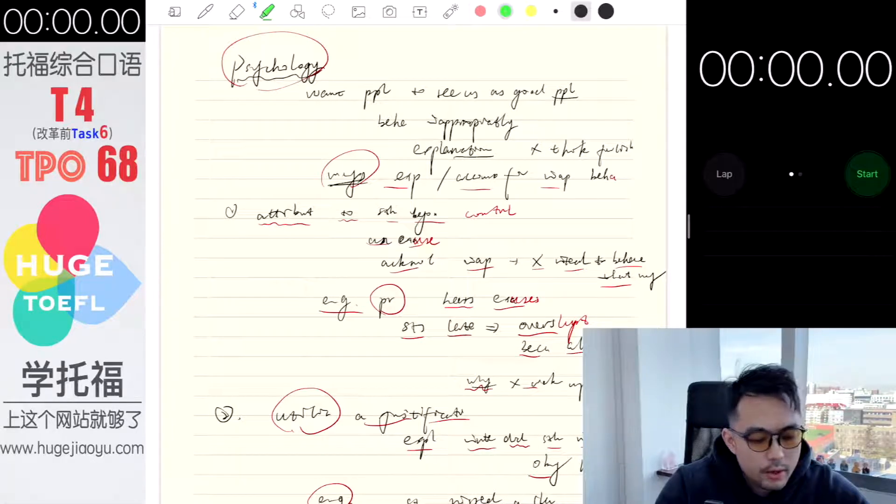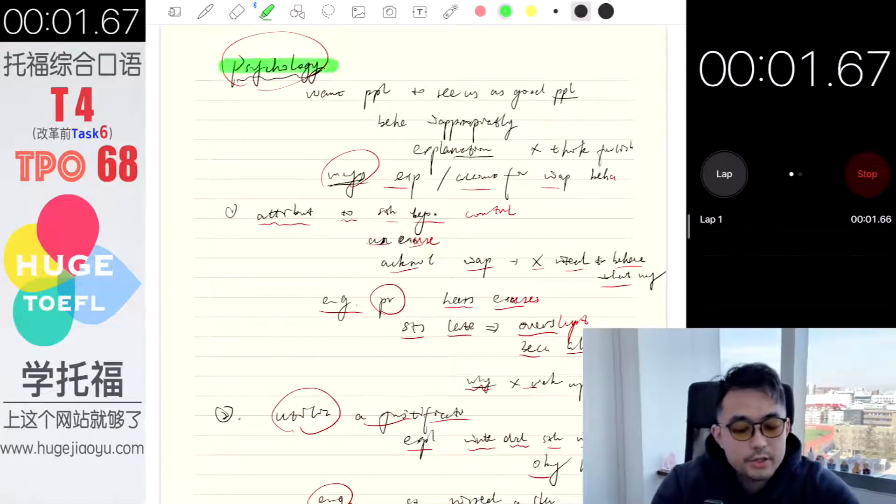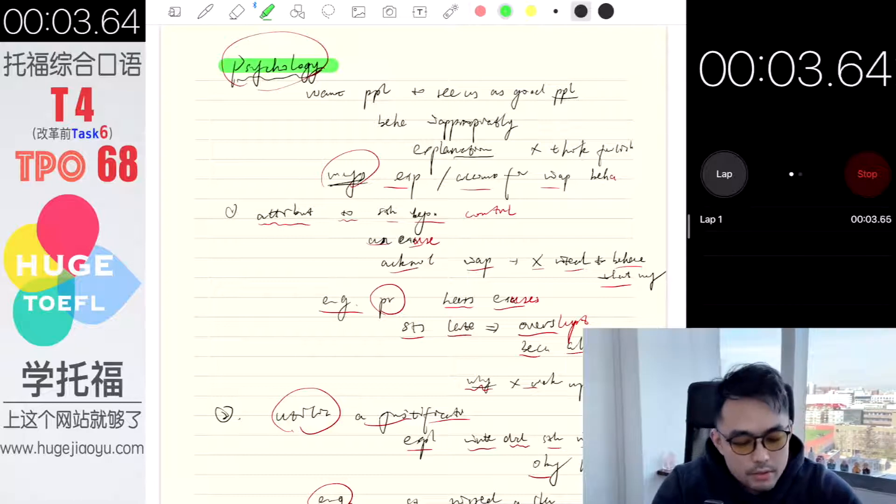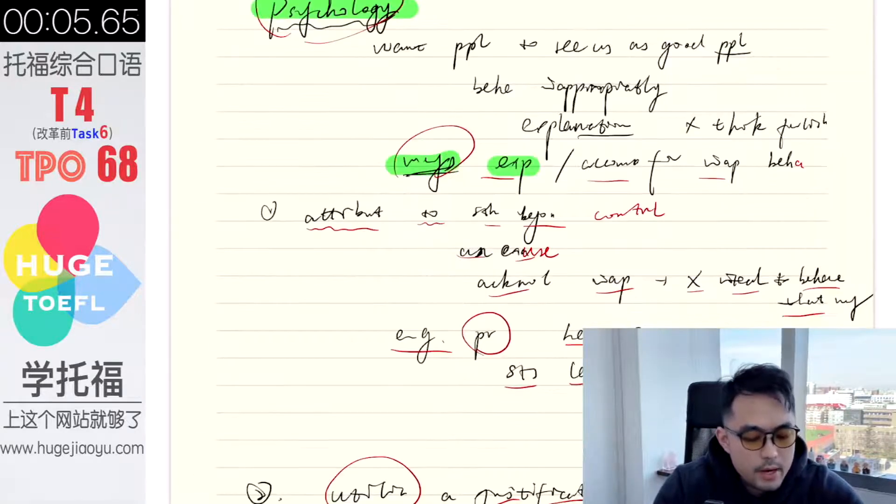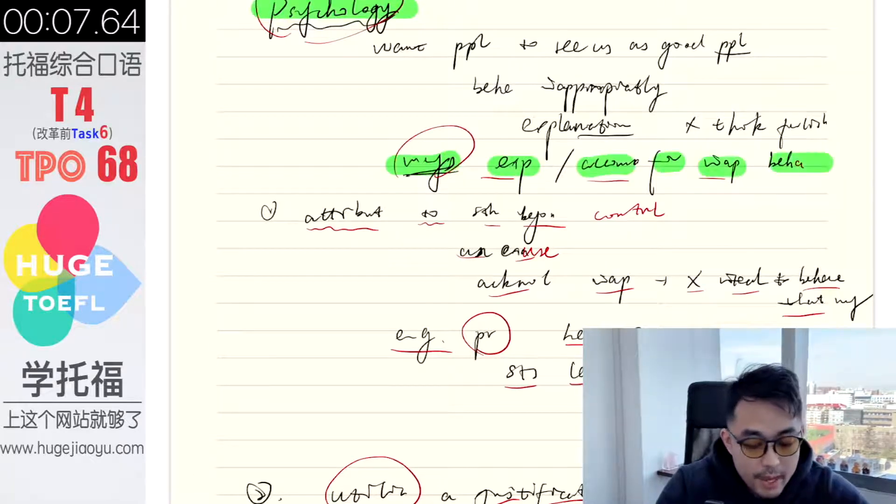Three, two, one, go. In a psychology lecture, the professor mainly introduced two ways people may explain or account for their inappropriate behavior.